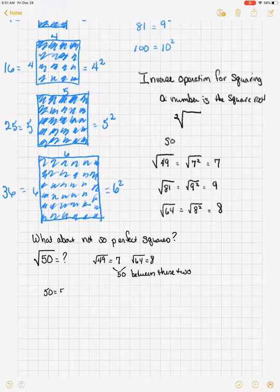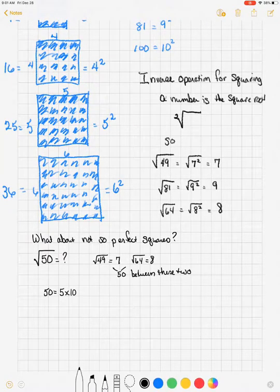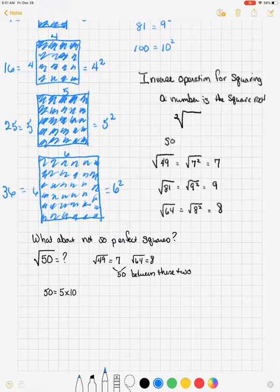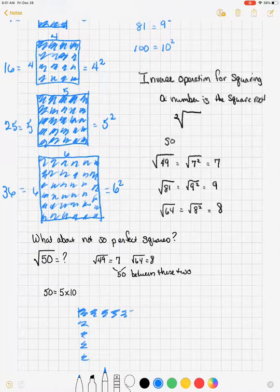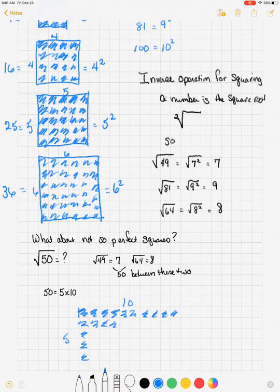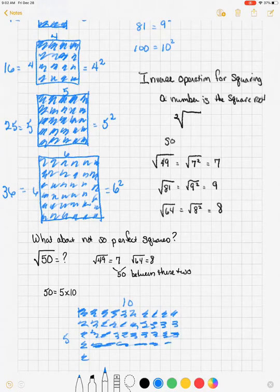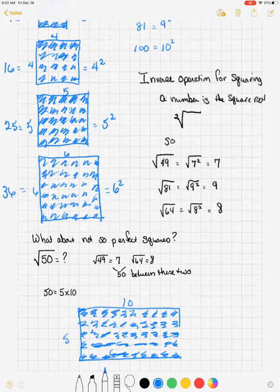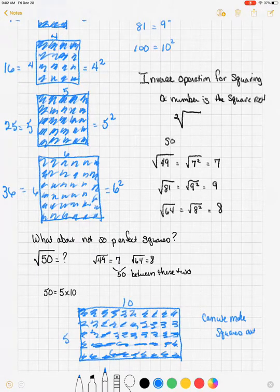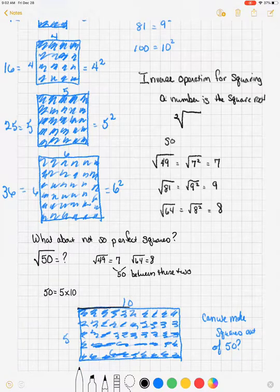And 50 is 5 times 10. So what happens if we make squares out of 5 by 10?